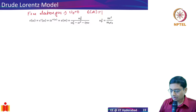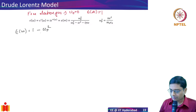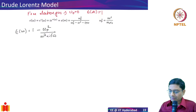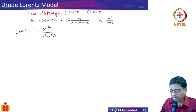So epsilon of omega is going to be one minus omega-p squared divided by omega squared plus i-gamma-omega. Note the sign carefully: the omega terms are negative and omega-naught is positive in the Lorentz model, so when you set omega-naught to zero in the Drude model it becomes one minus omega-p squared over omega squared plus i-gamma-omega.